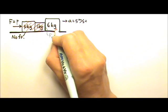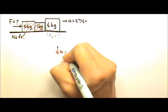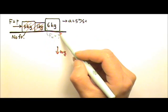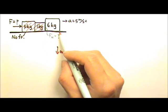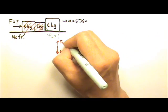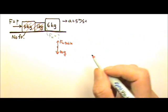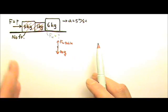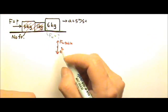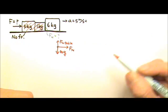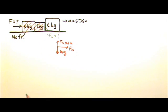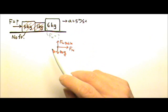Let's draw the force diagram for the 6 kilograms. We have Mg going down, and this block is touching two surfaces — this one and that one there. For the bottom surface, there's no friction, but there is a normal force from the table pushing up on the block. For the contact surface with the adjacent block, it pushes on the 6 kilograms to the right, so the normal force goes to the right. There is no tendency to slide along this surface, so there is no friction. No other forces, because the 6 kilogram block is not touching anything else.